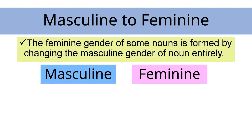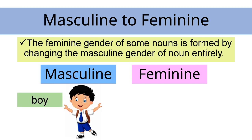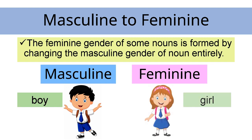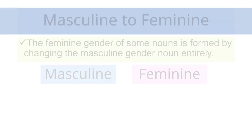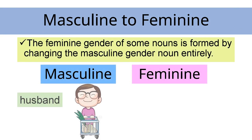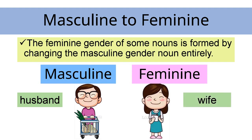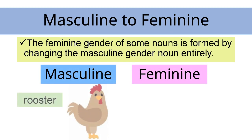The feminine gender of some nouns is formed by changing the masculine gender noun entirely. For example: boy becomes girl, husband becomes wife, and rooster becomes hen.